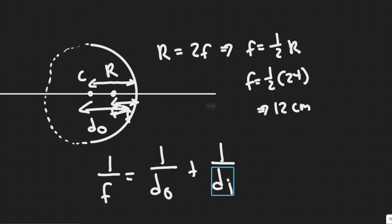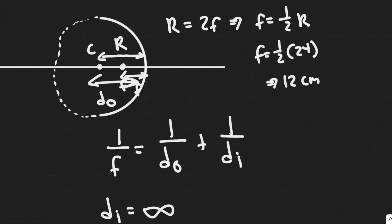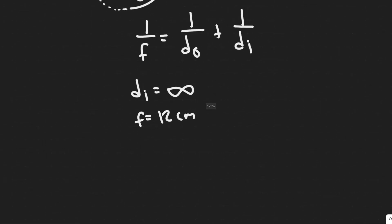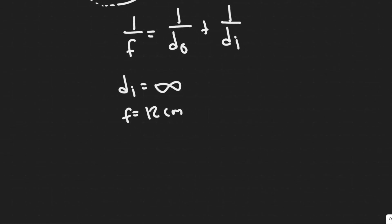I know f and I know i, which allows me to use this equation to solve for d₀, or the distance that our object needs to be placed. So 1 over 12 equals 1 over d₀, which is what we're solving for, plus 1 over infinity.